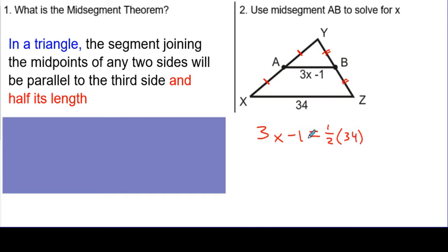All right, and this gives us a basic equation to solve. So just bringing this down, simplifying a little bit, 3X minus 1. And if I multiply 34 times one half, what's half of 34? That is 17.